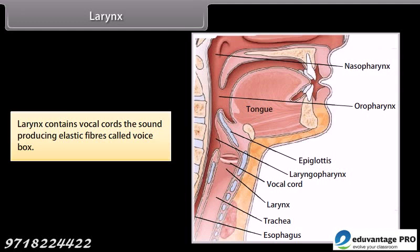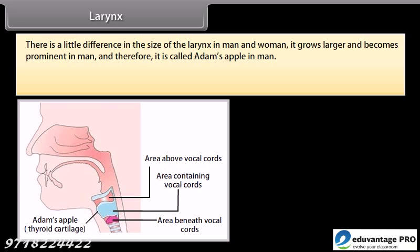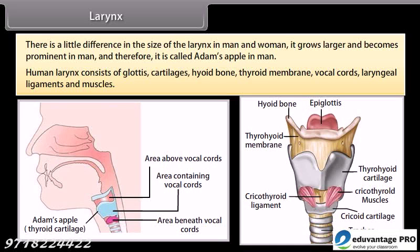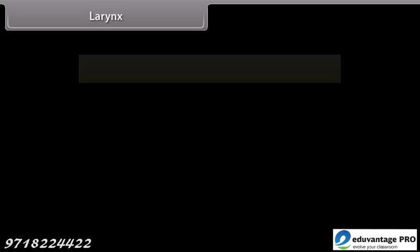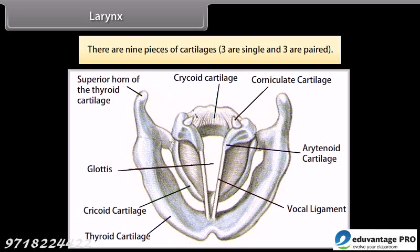The larynx contains vocal cords — sound-producing elastic fibers — and is called the voice box. There is a little difference in the size of the larynx in men and women; it grows larger and becomes prominent in men and is therefore called Adam's apple. The human larynx consists of glottis, cartilages, hyoid bone, thyroid membrane, vocal cords, laryngeal ligaments, and muscles. There are nine pieces of cartilages — three are single and three are paired. Glottis is an opening in the floor of the pharynx leading to the larynx.